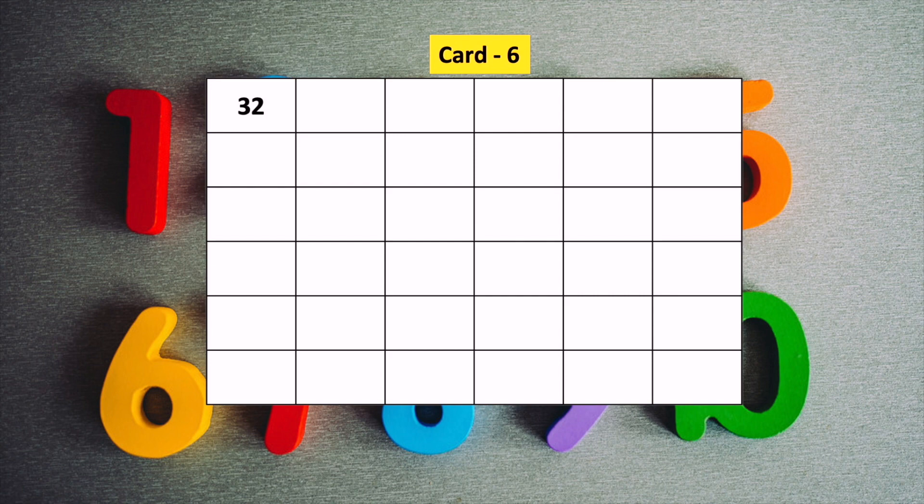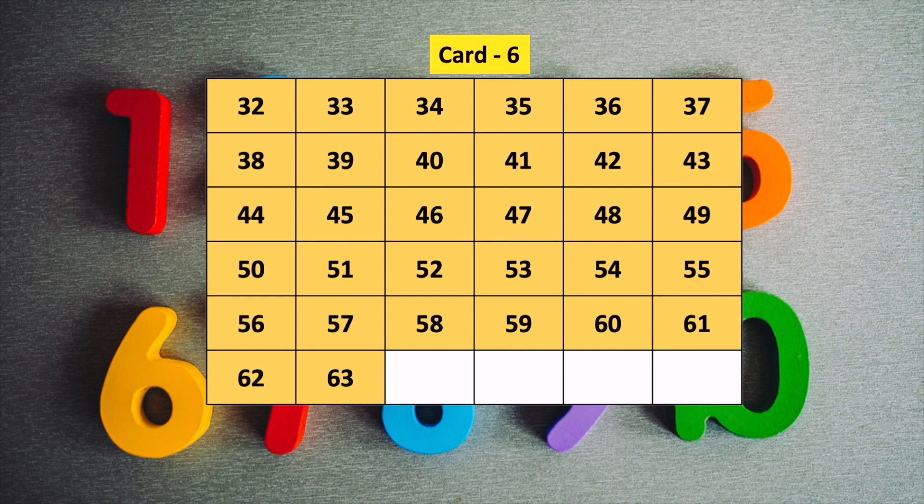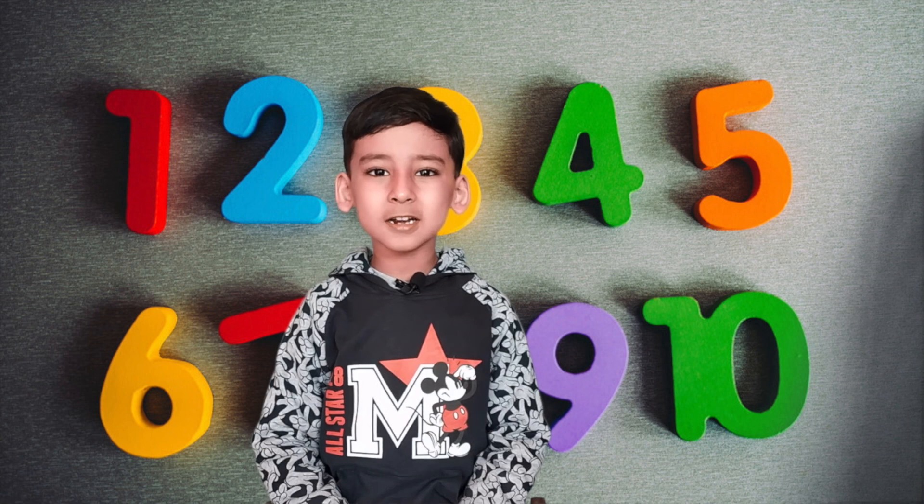For the sixth card, we start from number 32. We write 32 numbers and then skip next 32 numbers. So this card will have numbers from 32 to 63 only. Now our cards are ready for the trick.